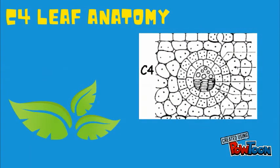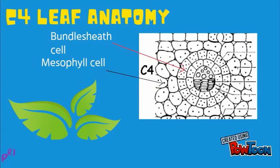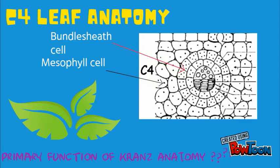C4 leaf anatomy is called Kranz anatomy. It has inner ring-shaped cells called bundle sheath cells, which contain starch-rich chloroplasts. Mesophyll cells are present as the outer ring. The primary function of the Kranz anatomy is to provide a site in which CO2 is concentrated around RuBisCO.